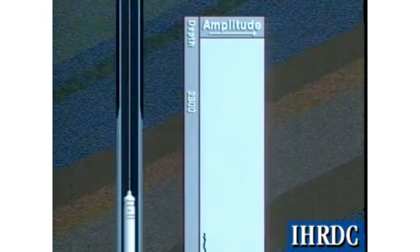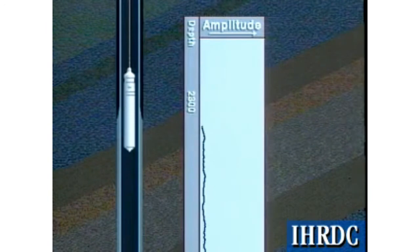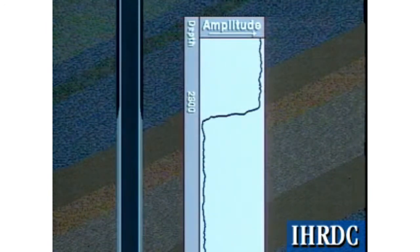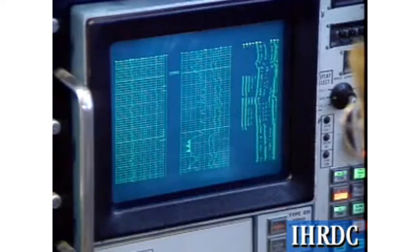The amplitude curve is universally presented on CBLs and typically displays the amplitude of the first signal to arrive at the near receiver. Since this amplitude is for the pipe portion of the signal, a low amplitude indicates good pipe-to-cement bonding, while a high amplitude indicates poor bonding.